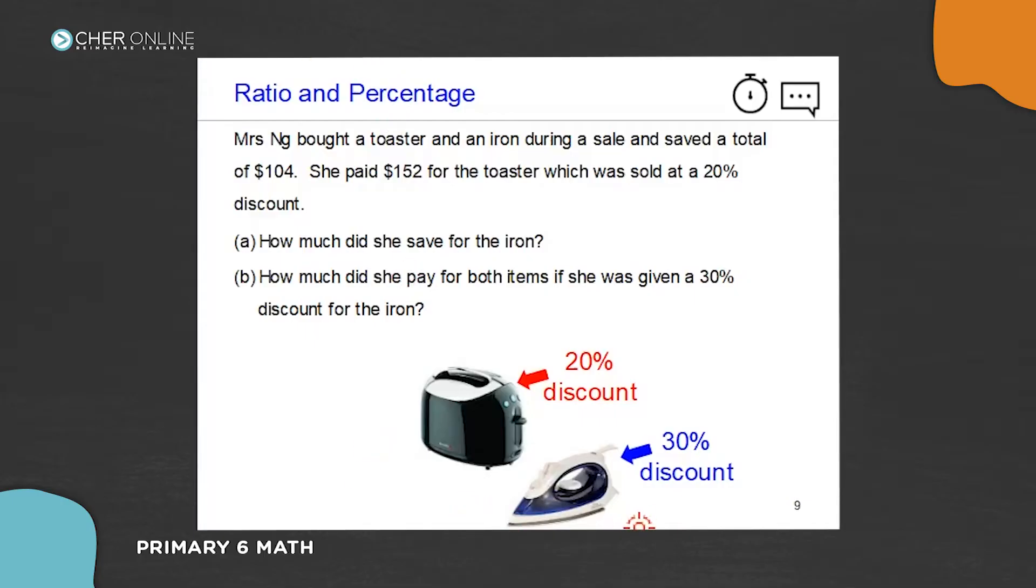Next question. Mrs. Ng bought a toaster and an iron during a sale and saved a total of $104. She spent $152 for the toaster which was sold at 20% discount.